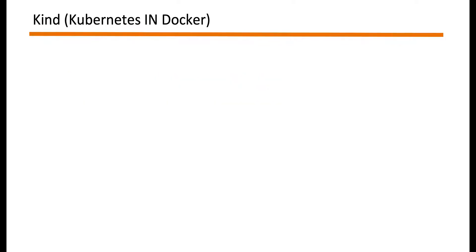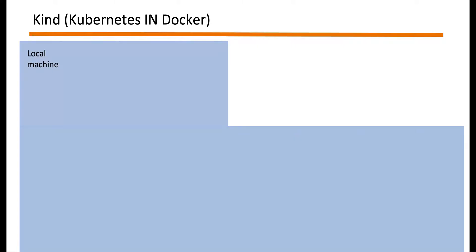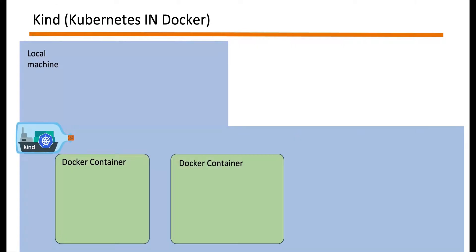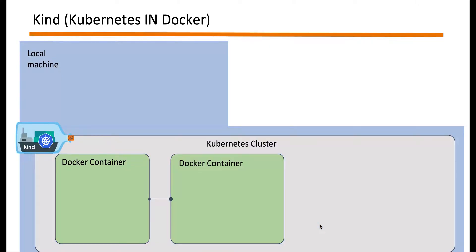Without going into too much detail of how exactly Kind works under the hood, let's look at the highlights of what it does on your local machine to form a Kubernetes cluster. What Kind does is spin up multiple Docker containers and join each container in such a way that it forms a Kubernetes cluster, where the first Docker container acts as the Kubernetes master node and the rest act as the Kubernetes worker nodes.